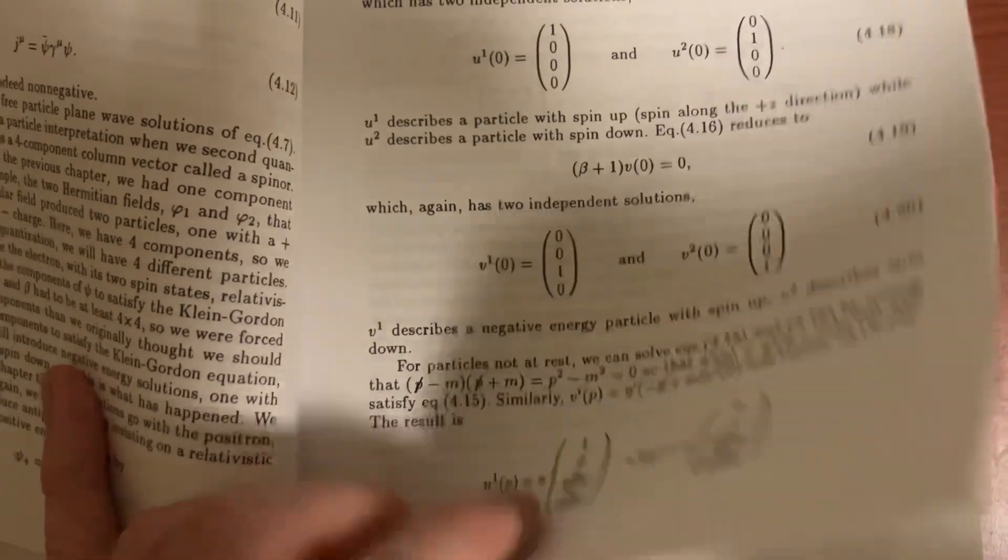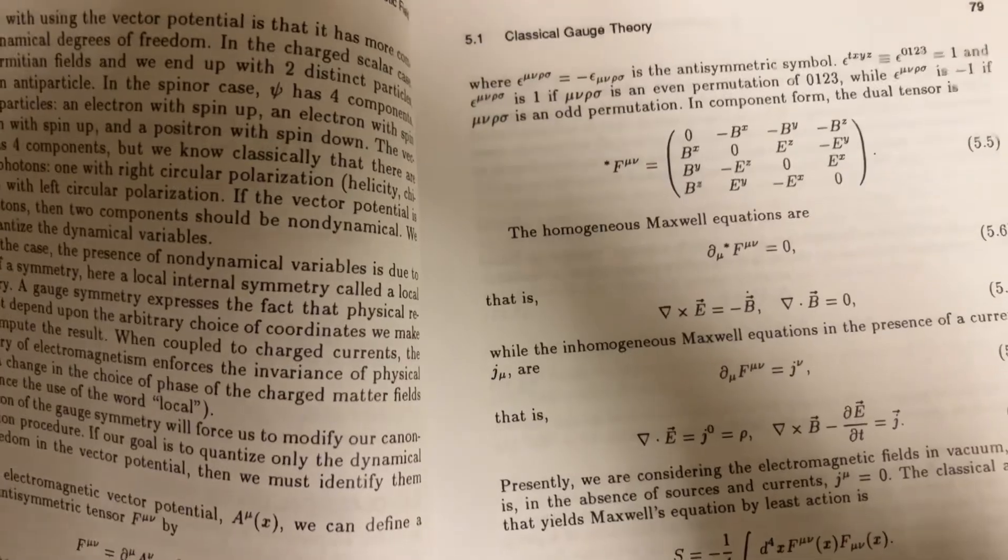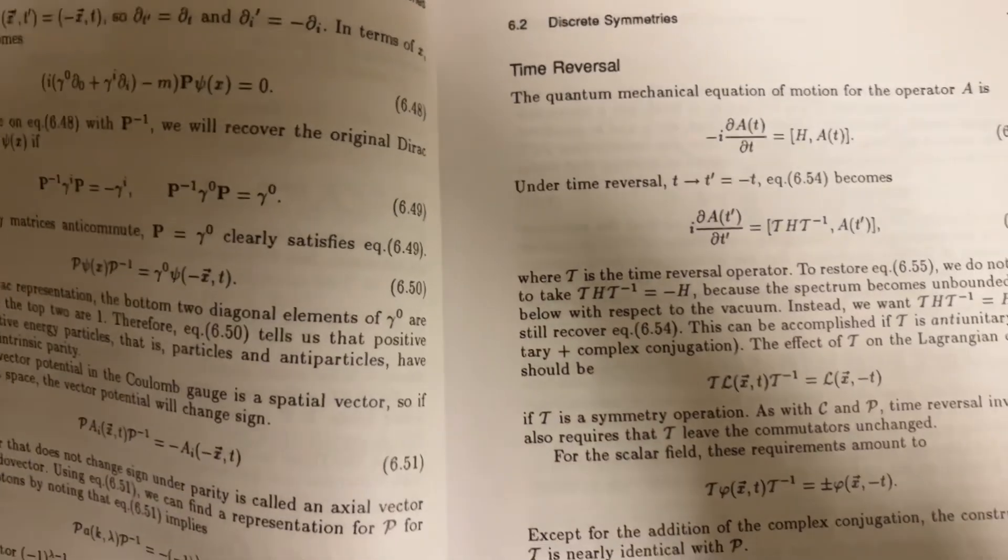You can see spin-ups, spin-downs, and it tells you which type of particle, if it's electron or neutrino. And then, you know, so this is just simple SU rotations.